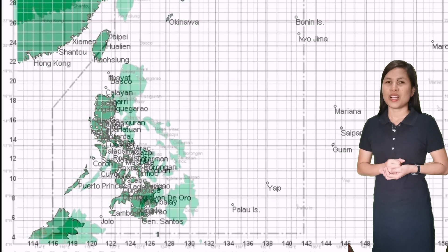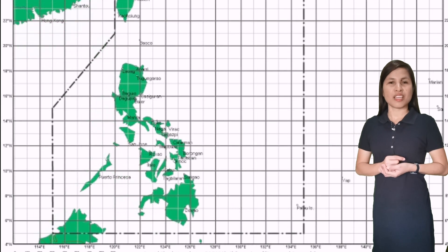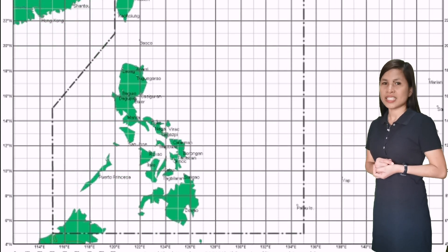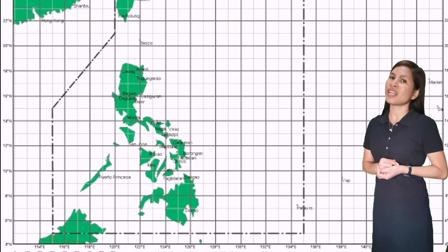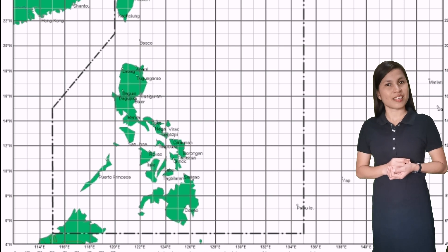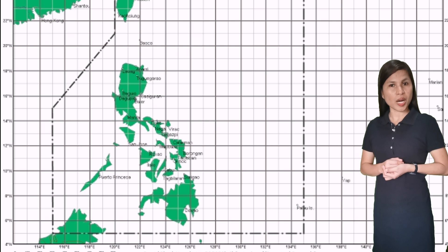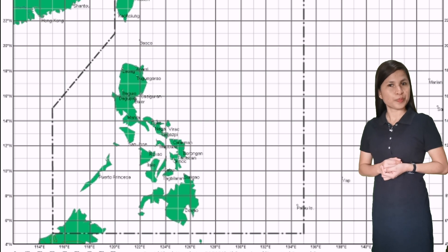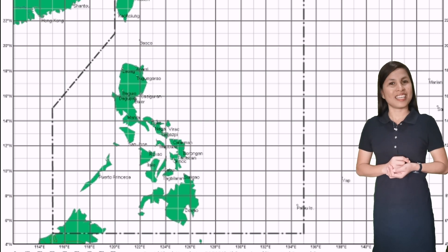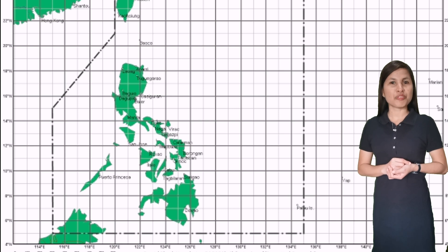Now, what if a typhoon is located at 5 degrees north and 138 degrees east? Is it within the PAR? No, it is outside the Philippine Area of Responsibility.